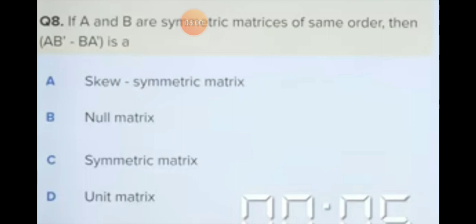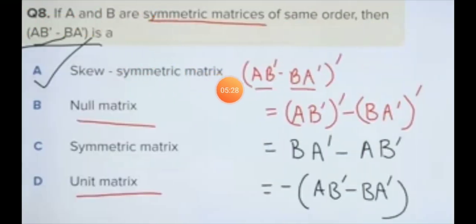Taking the transpose of (AB minus BA), we get (AB)' minus (BA)'. When we transpose a product, the order changes and we get the transpose of each matrix. This becomes B'A' minus A'B'. Since the matrices are symmetric, the transposes equal the original matrices, giving us BA minus AB.